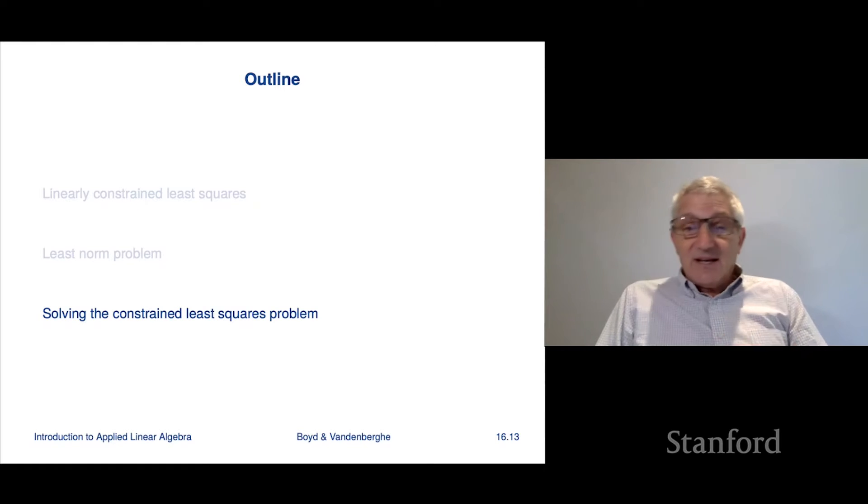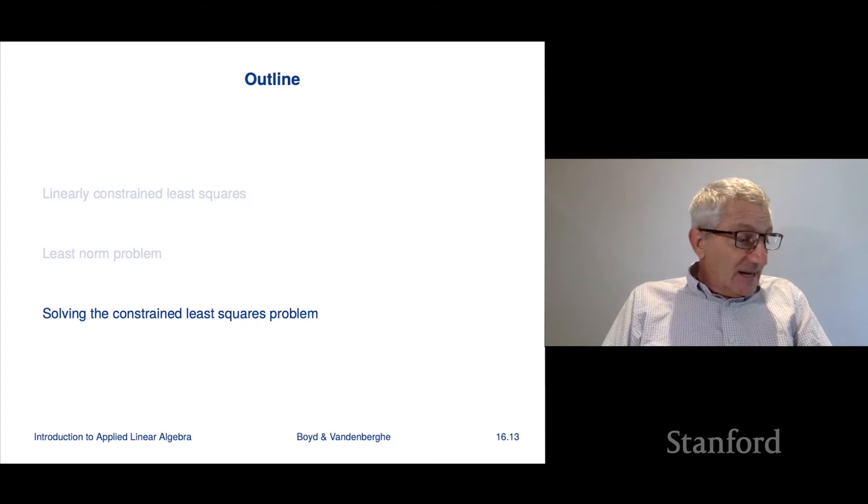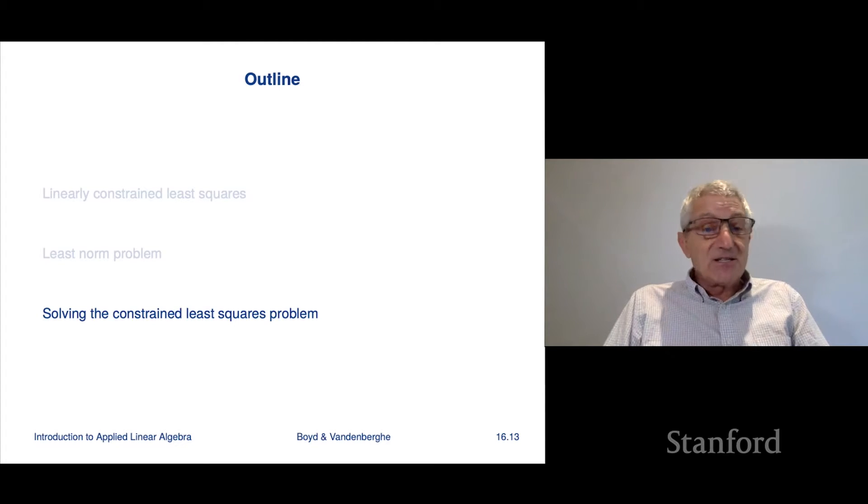Alright. Now I'm going to show you how to solve the constrained least squares problem. Actually, it's going to turn out to be very much like the least squares problem. We'll reduce it to something that involves our old friend, the QR factorization or solving linear equations. Let's see how that works.